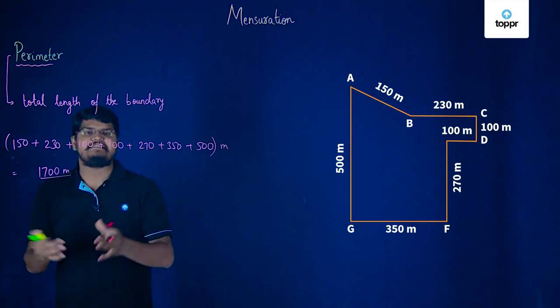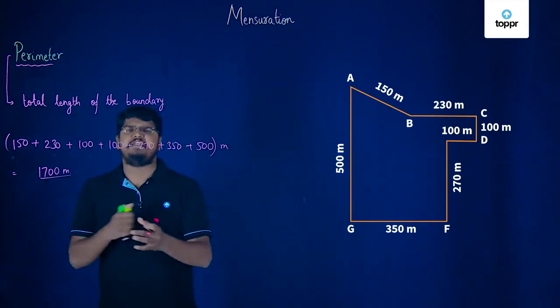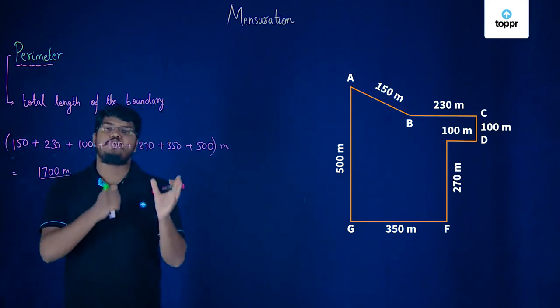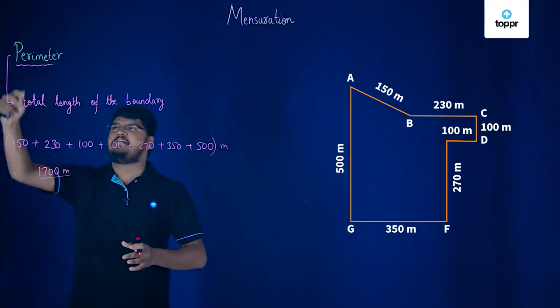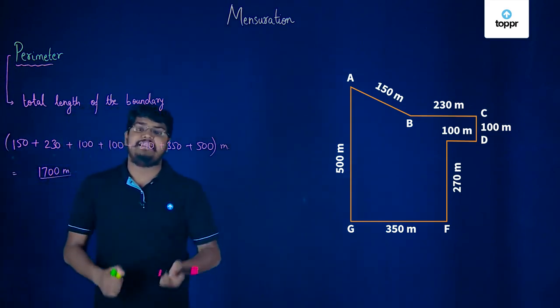Well, this is actually known as mensuration. Well, this mensuration helps us find the various measurements which are related to closed shape and these measurements, they can be in terms of perimeter that is length of all these sides or it can even be in area form.